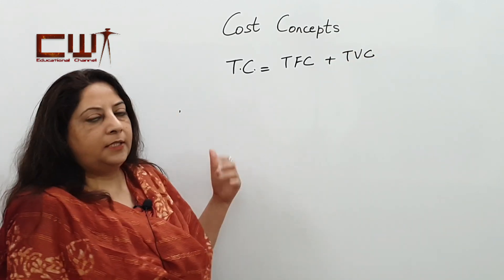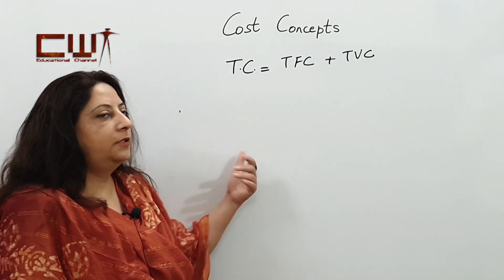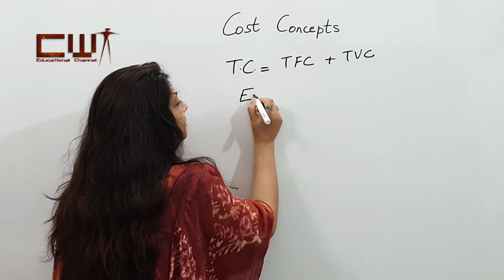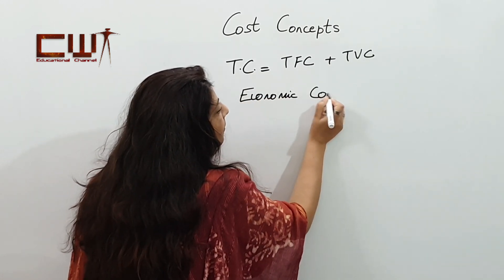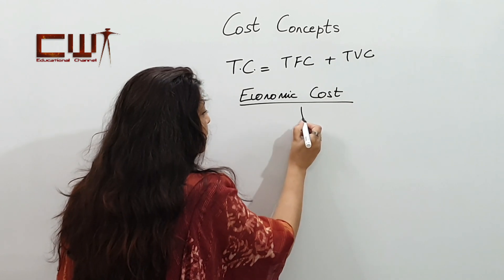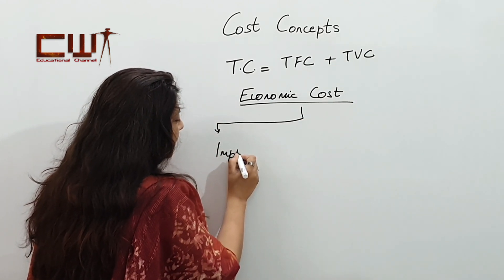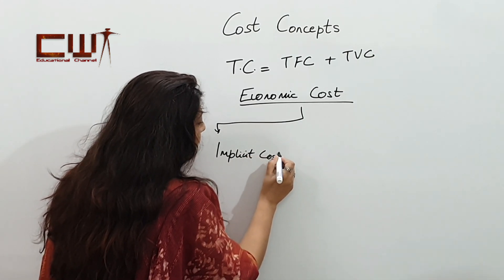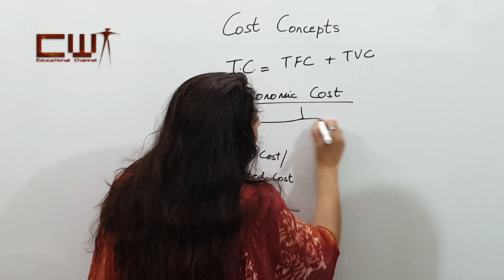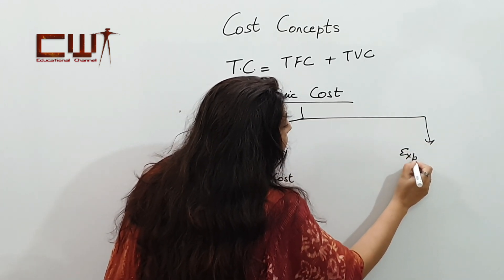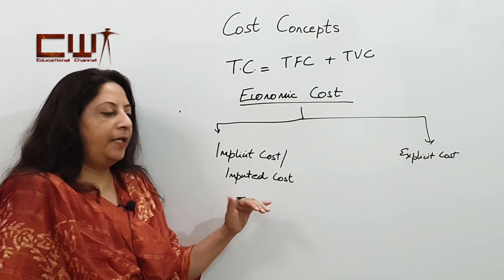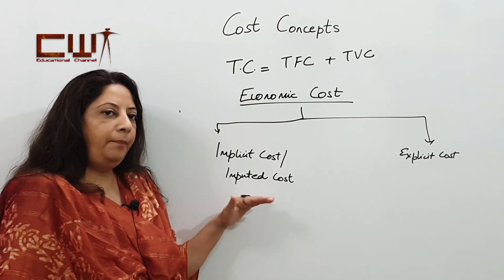Now before discussing more on fixed cost, let us first understand what is an economic cost. Economic cost of production constitutes two parts. One is the implicit cost, which we also term as imputed cost. The second category is explicit cost. As the name suggests, implicit cost comes from the word implied, so it is an implied cost of production.